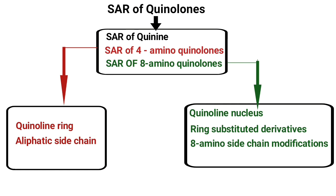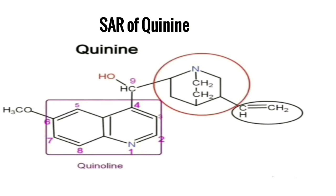First, we are going to see the SAR of quinine. The structure of quinine has two heterocyclic rings: one is the quinoline ring and the other is a quinuclidine ring, connected by means of a hydroxymethyl group (carbinol). That carbon is called the ninth carbon. The quinoline ring has a methoxy group at the sixth position, and the quinuclidine moiety has a vinyl group at the third position.